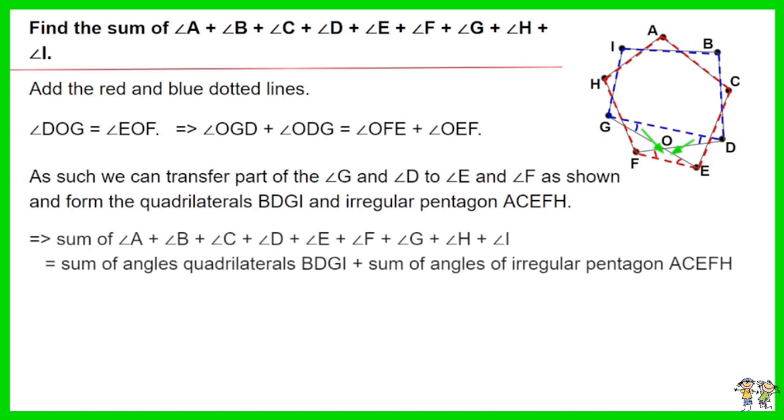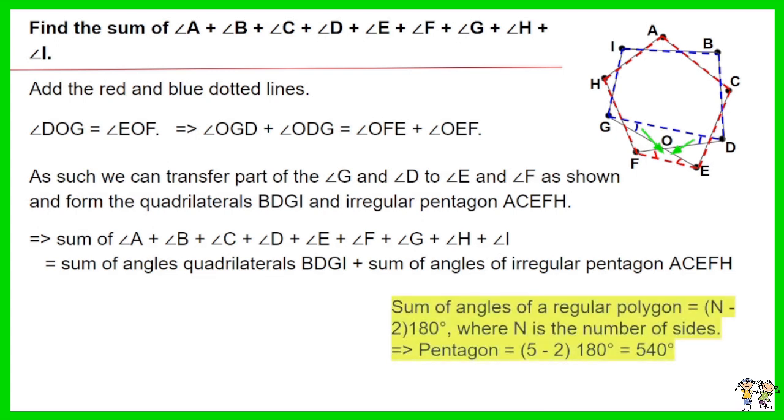Sum of all angles of a regular polygon equals N minus 2 times 180 degrees, where N is the number of sides. For a pentagon, it equals 5 minus 2 times 180 degrees, which equals 540 degrees. As such, the equation equals 360 degrees plus 540 degrees. The answer is 900 degrees.